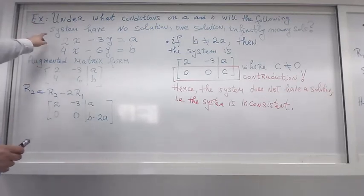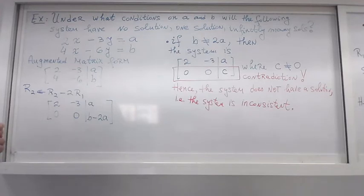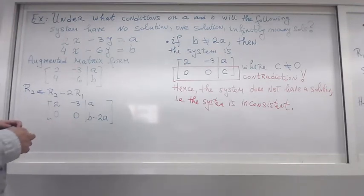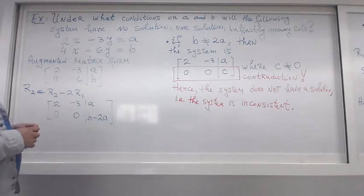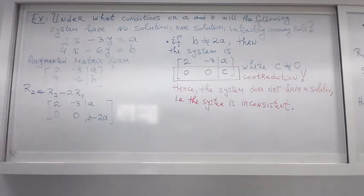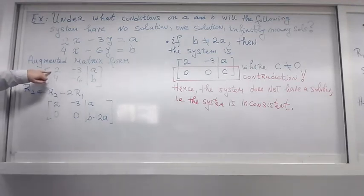So here's the system: two equations, two unknowns. I write the augmented matrix, and I could divide by two to get my leading entry as one, but that's not that smart at this point.